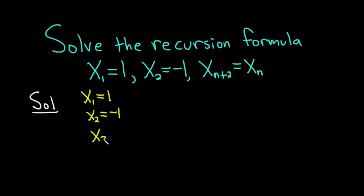Now we can look at x sub 3. In order to figure out x sub 3, we can use this here. So if we're going to replace this with a 3, that forces n to be equal to 1, because 1 plus 2 is 3. So this is equal to x sub 1, which we know is equal to 1 from before.